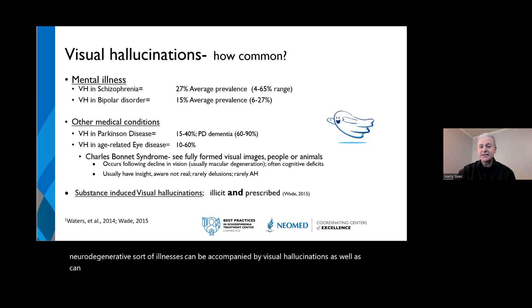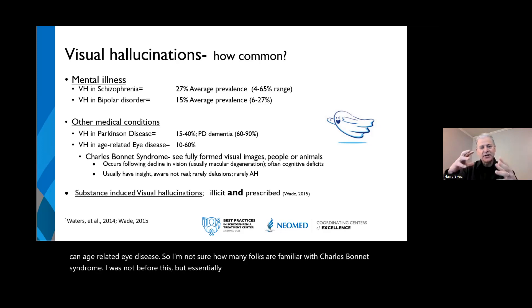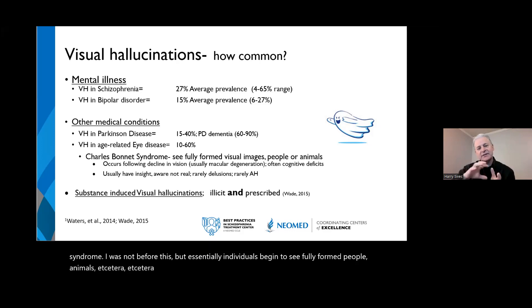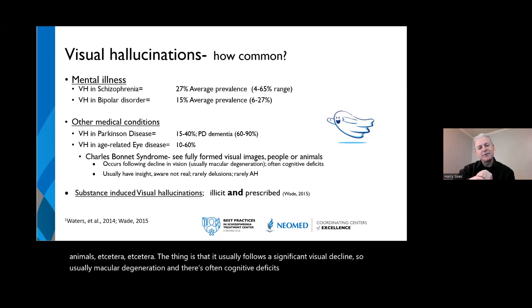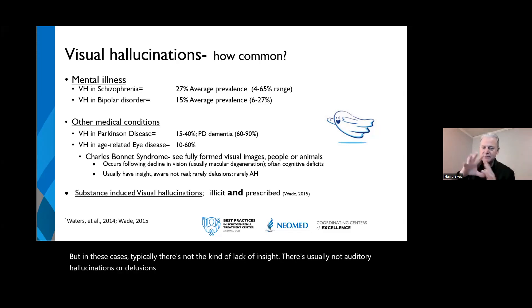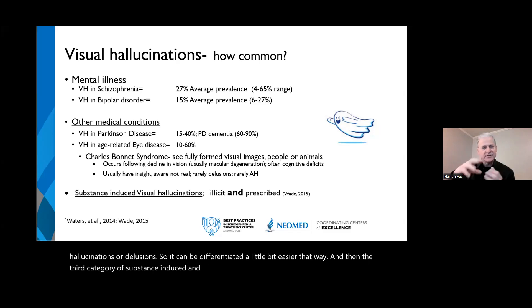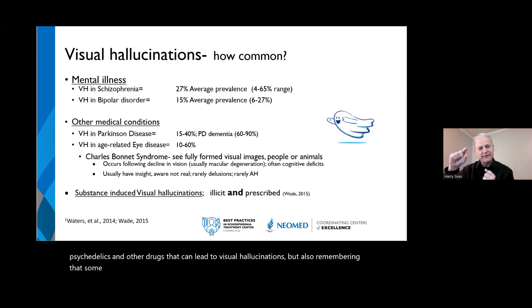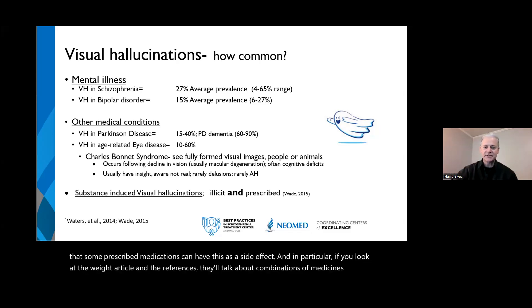Charles Bonnet syndrome — which I wasn't familiar with before this — involves individuals beginning to see fully formed people, animals, et cetera, usually following significant visual decline like macular degeneration, often with cognitive deficits. But typically in these cases there's not a lack of insight, and usually no auditory hallucinations or delusions, so it can be differentiated more easily. The third category is substance-induced — including prescribed medications, which can have this as a side effect, sometimes in combinations.